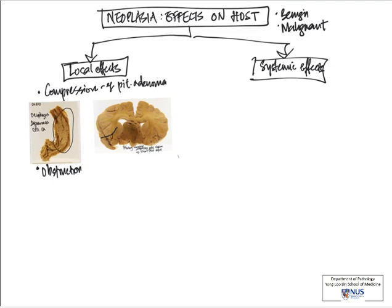Tumors can also give rise to ulceration and bleeding. These are often tumors that arise in mucosal-lined surfaces. Once they invade into the underlying stroma, they can sometimes invade into vessels as well, and this can occur in the GI tract. Some tumors can present with bleeding. Tumors can also perforate, and again this occurs in hollow organs such as the gastrointestinal tract.